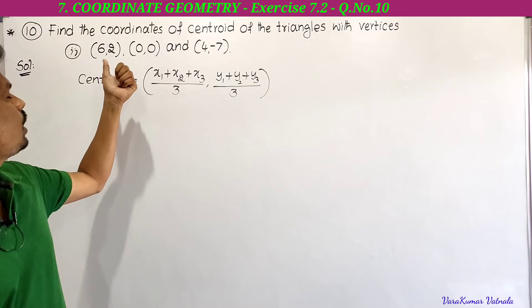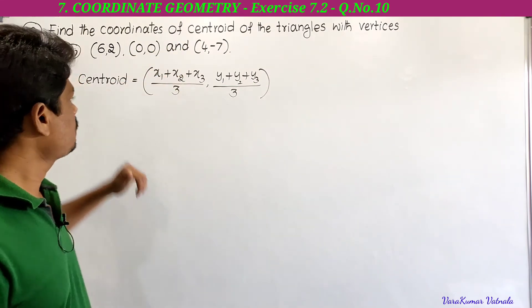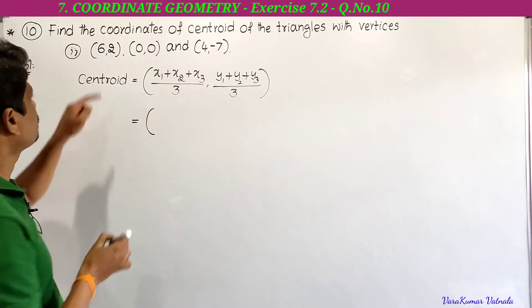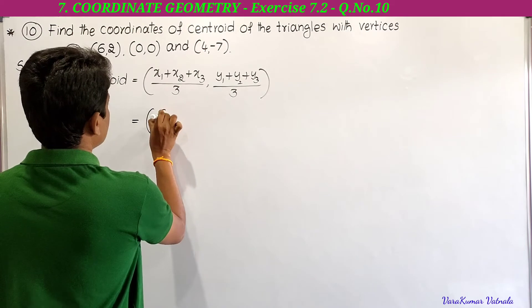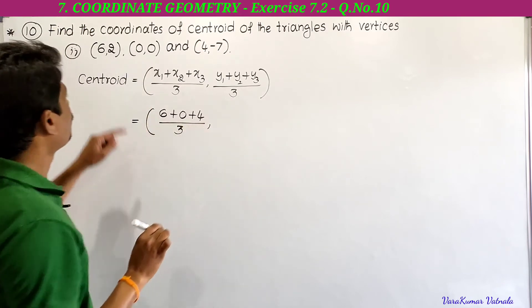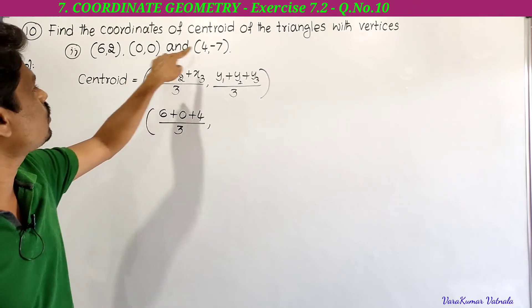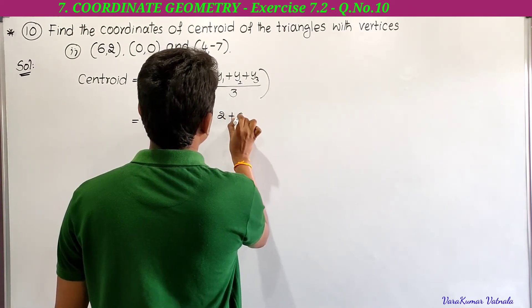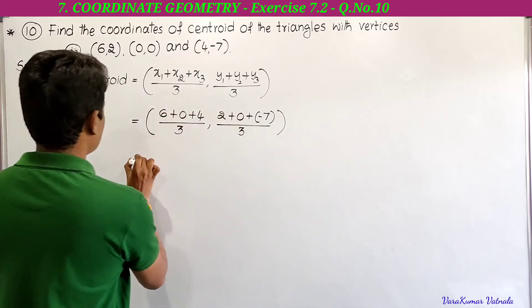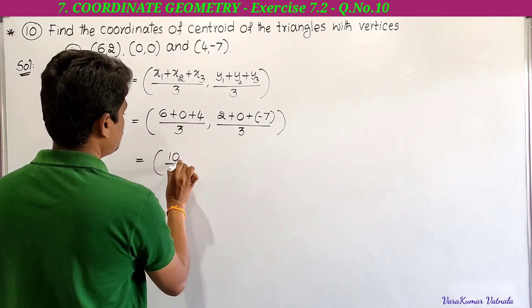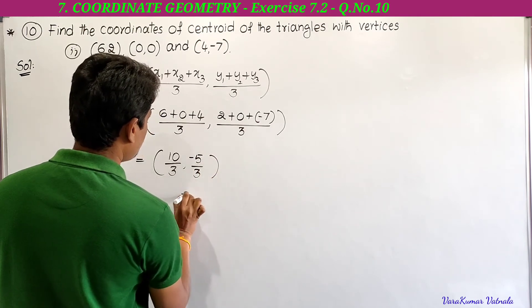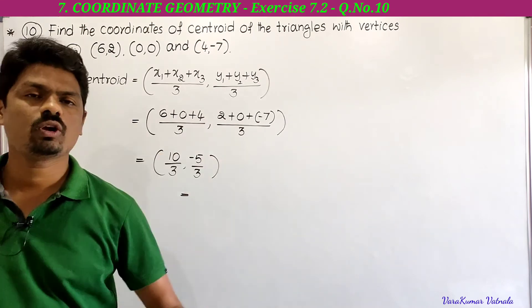The second part has vertices (6, 2), (0, 0), and (4, -7). Substituting into the centroid formula: x = (6 + 0 + 4) / 3 = 10/3. For y: (2 + 0 + (-7)) / 3 = -5/3. So the centroid is (10/3, -5/3).